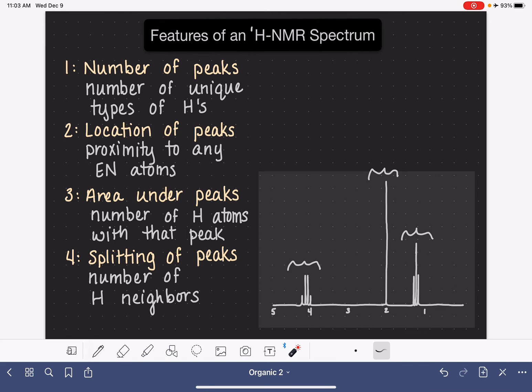The splitting of the peak refers to whether or not each individual peak is shown as just one single line, or it divides itself into some smaller lines as well. So this peak right here, we can see because it has four different spikes on it, we see that this thing has been split into four.